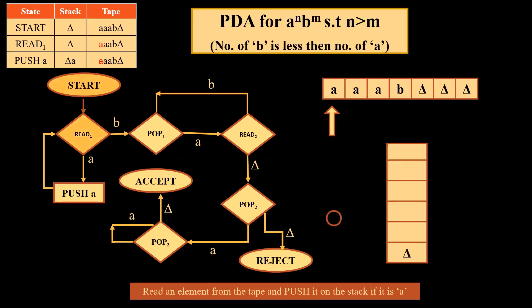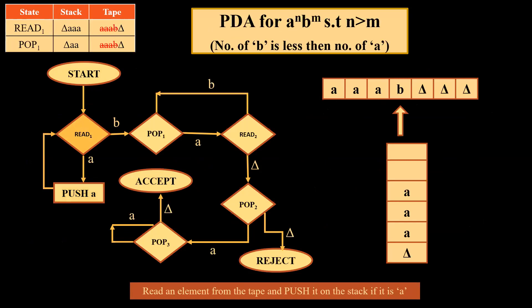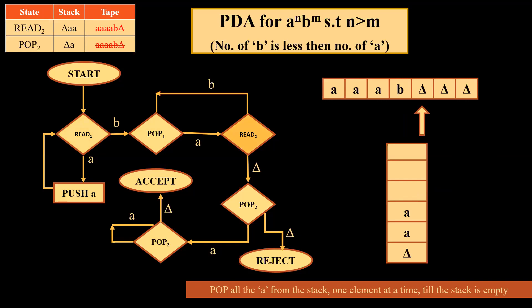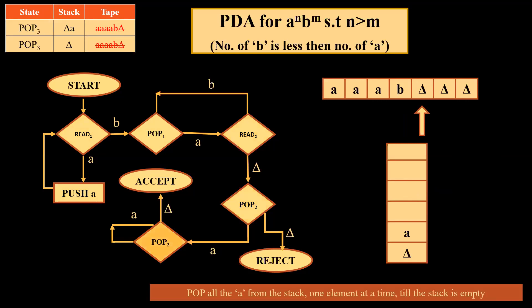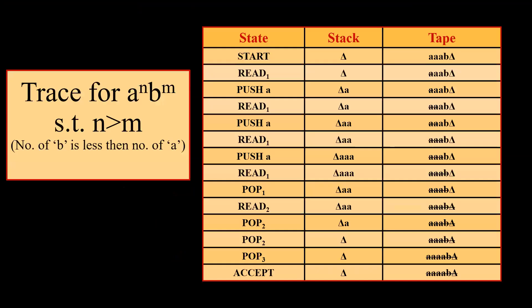We start with the first read, pushing the first a onto the stack. The second a is pushed, and then the third a is also pushed. Now we have b on the tape, so the pop operation begins and the first a is popped from the stack. The stack now has two a's left, and we have reached delta on the tape. Corresponding to read two on delta, we move to pop two and retrieve an a from the stack. We then pop all remaining a's from the stack using a self loop of a on pop three. Once all elements are popped, the stack is empty, the tape was already empty, and the machine moves to the accept state. This is the complete trace for aⁿbᵐ with n > m.